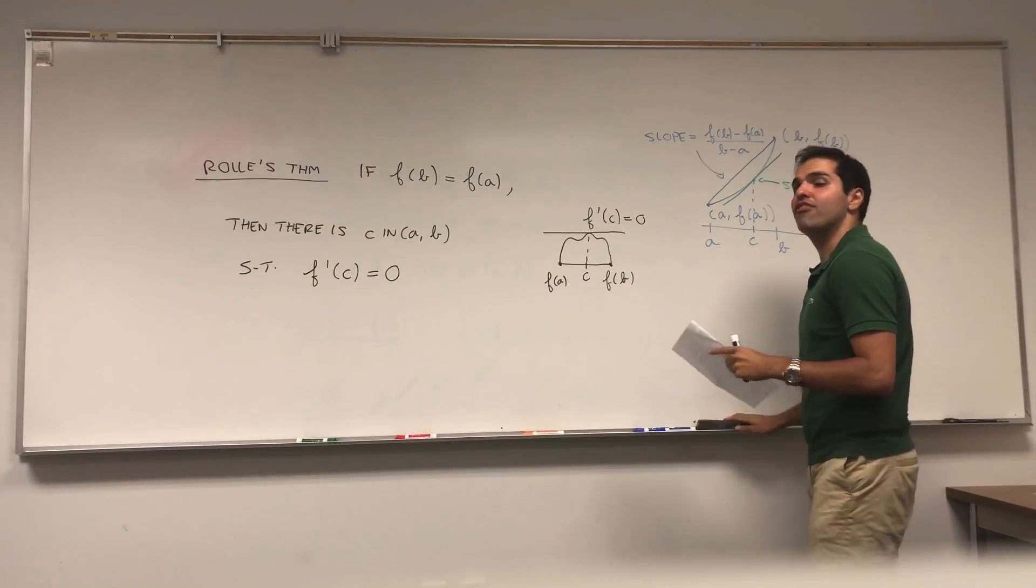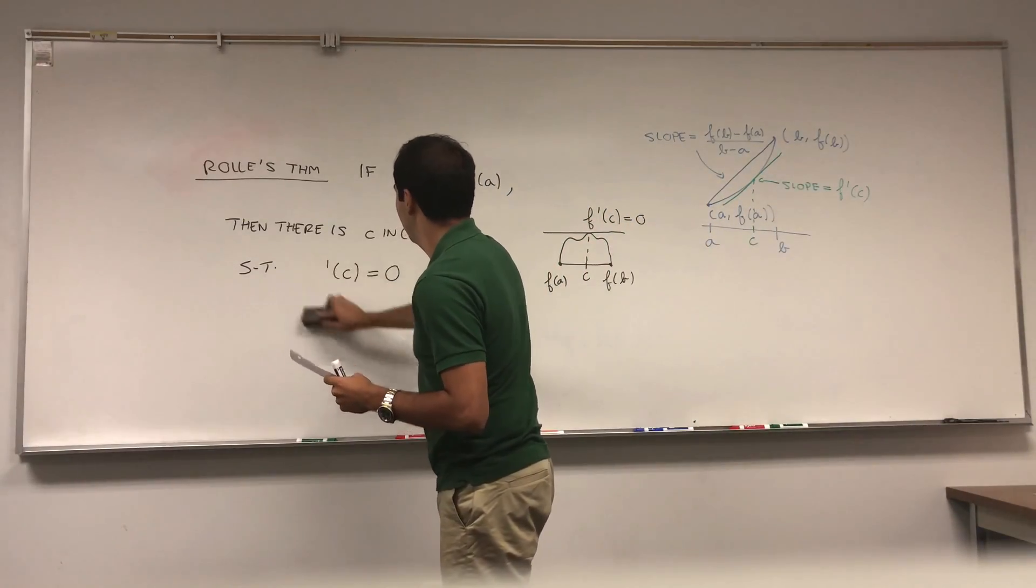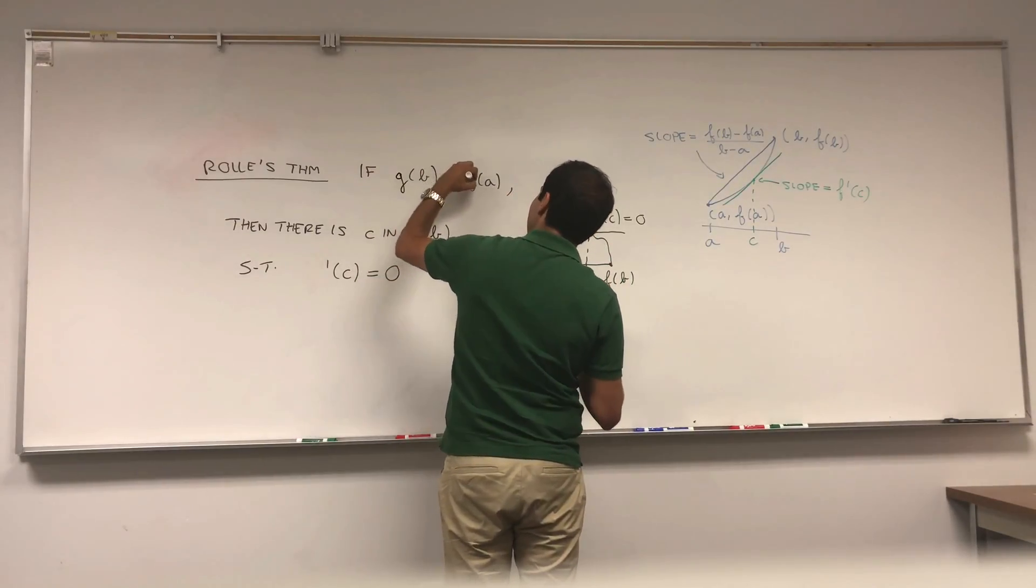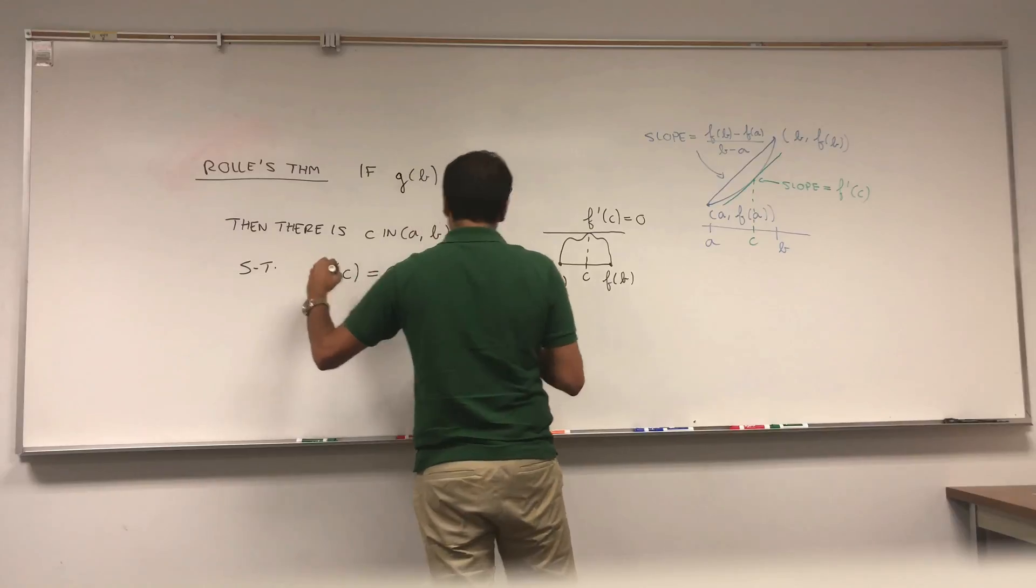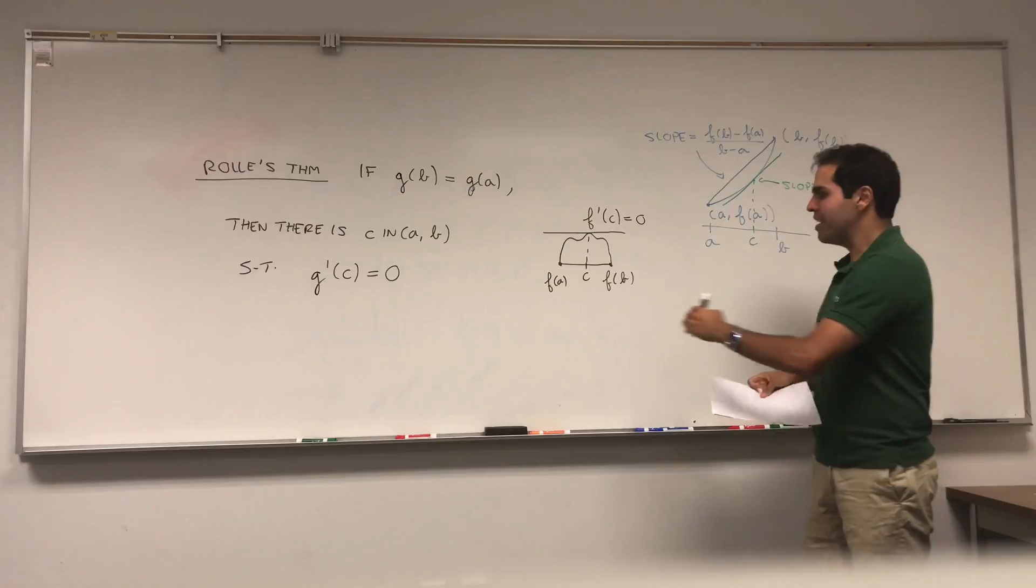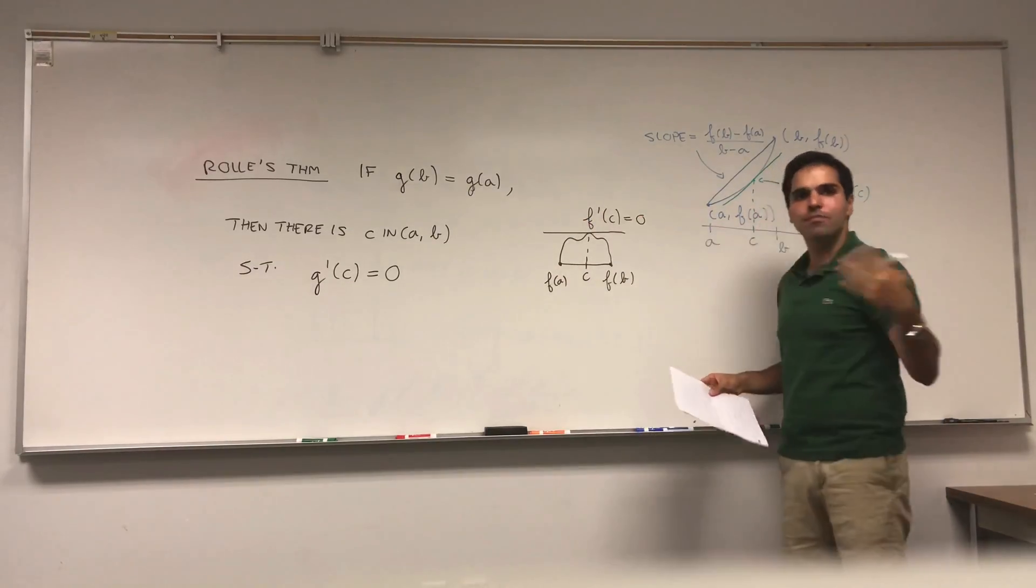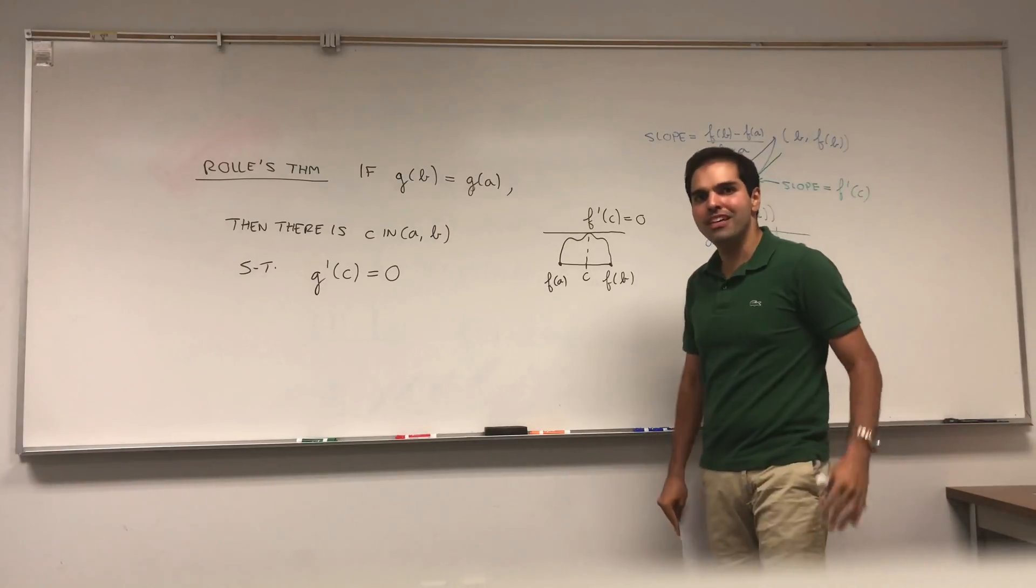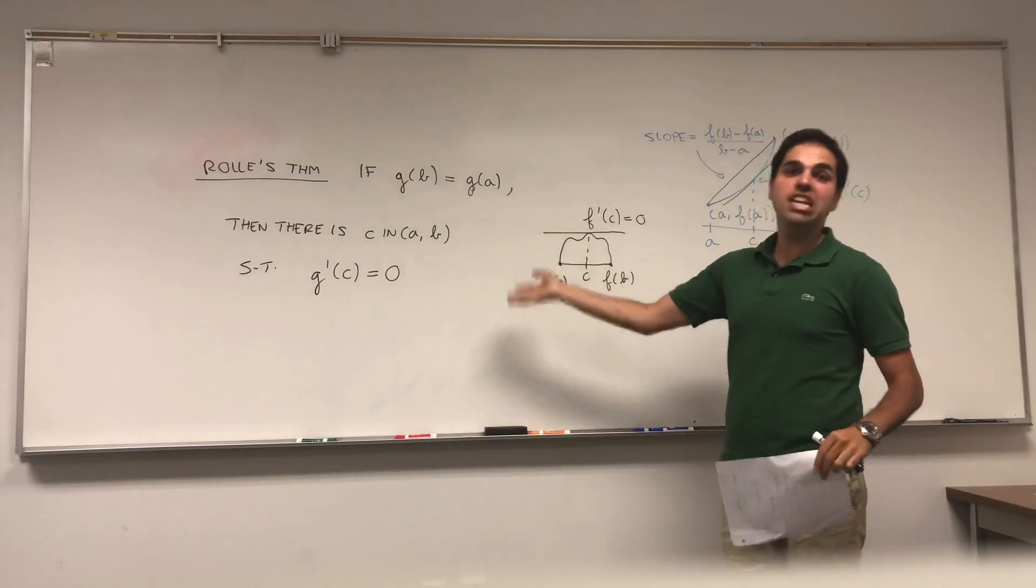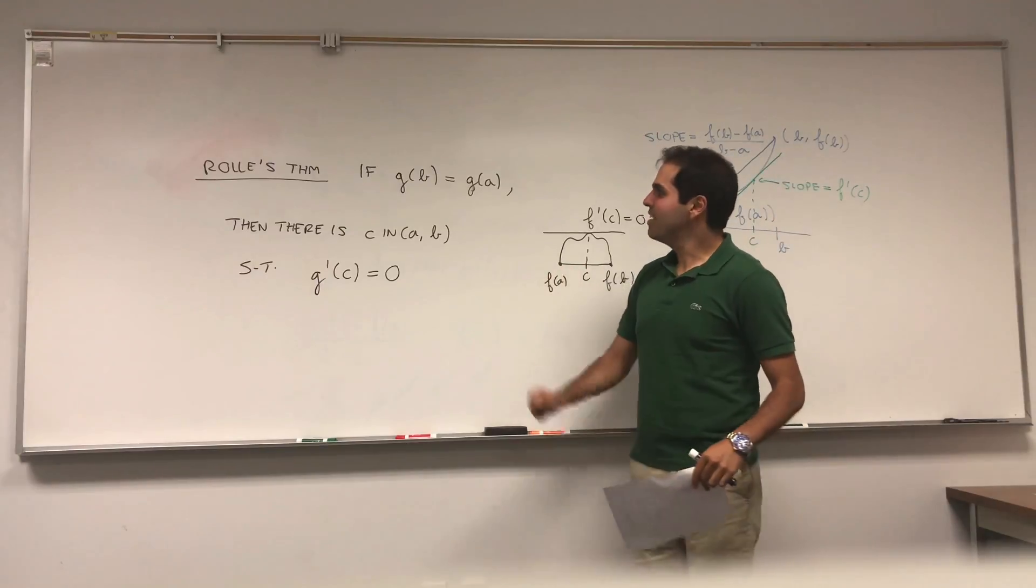In fact, instead of using f, let me use another function g because we will use that. So if this ending value of the function equals the starting value, then there's some point where the derivative is zero. I don't know if it makes sense. You know, if the starting and ending values are the same, at some point it basically has to have a maximum or a minimum. Therefore the derivative is zero. And in fact I'll do another video on the proof of that. But here's the interesting thing. Rolle's theorem is kind of a special case of the mean value theorem.